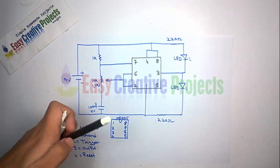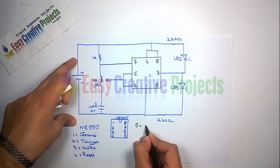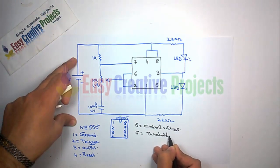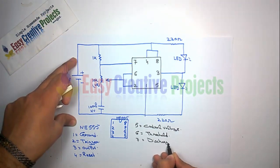fifth for control voltage, sixth for threshold, seventh for discharge, and eighth for power supply.